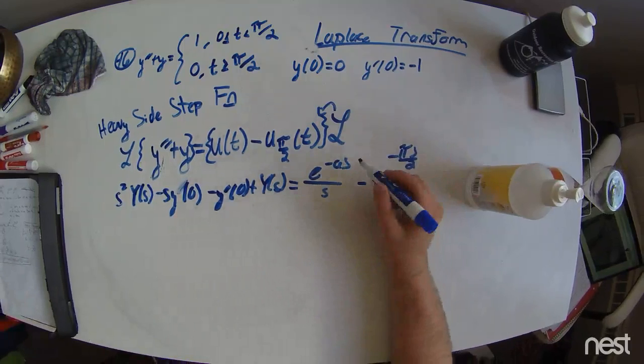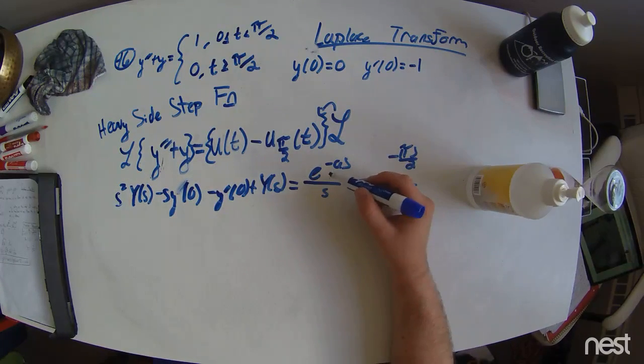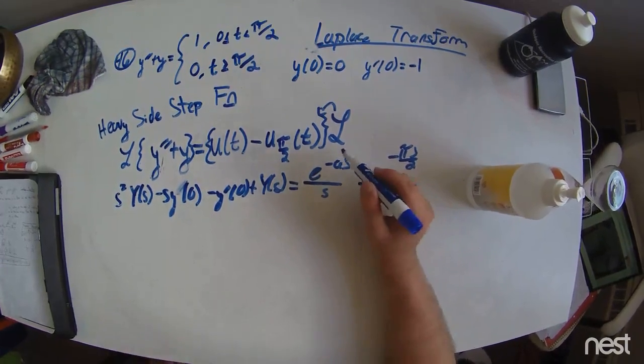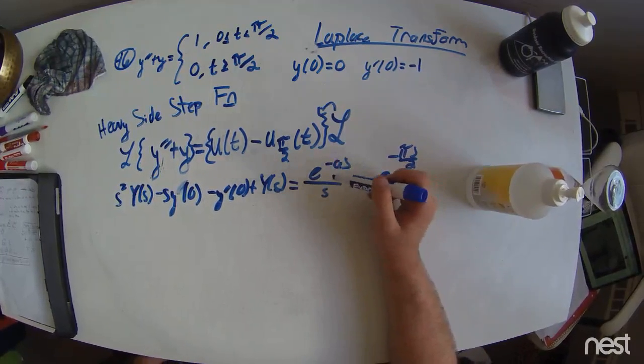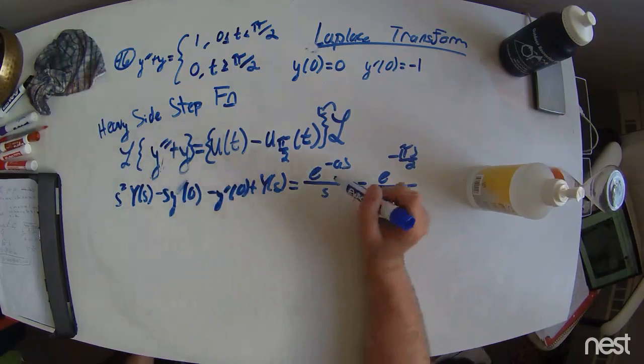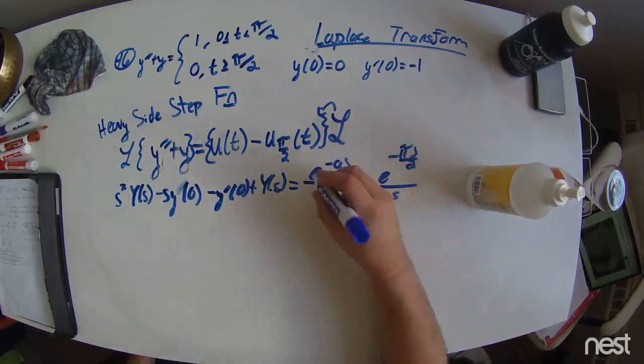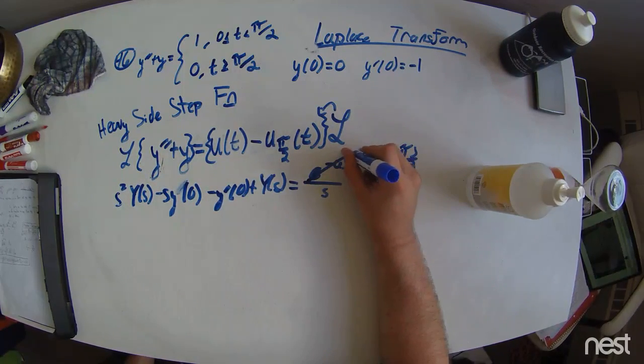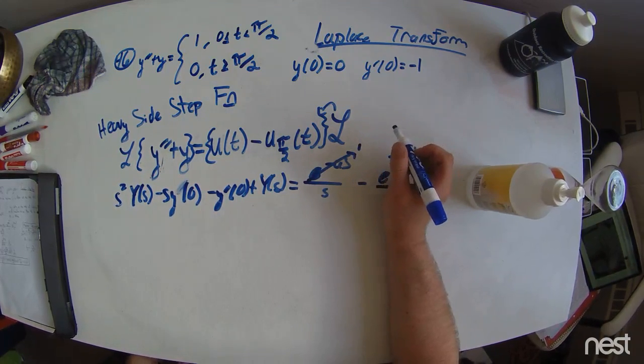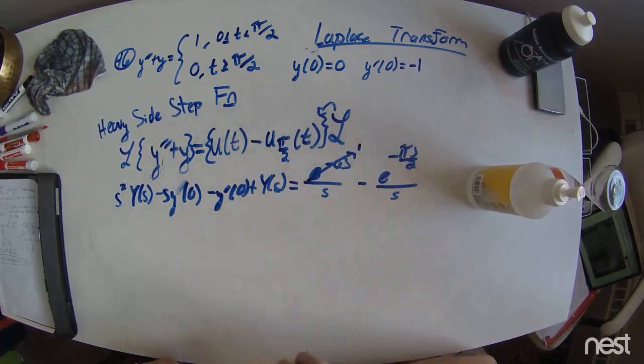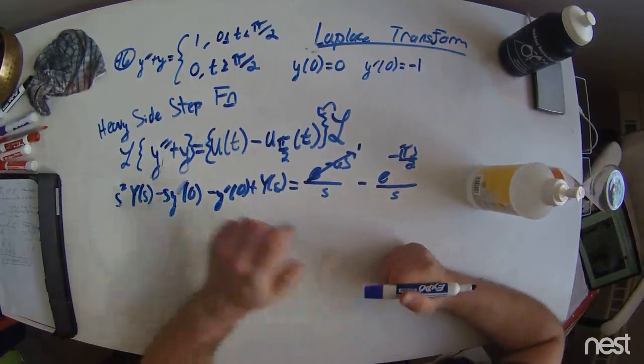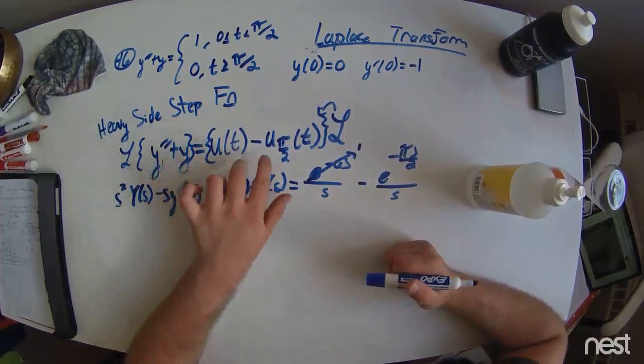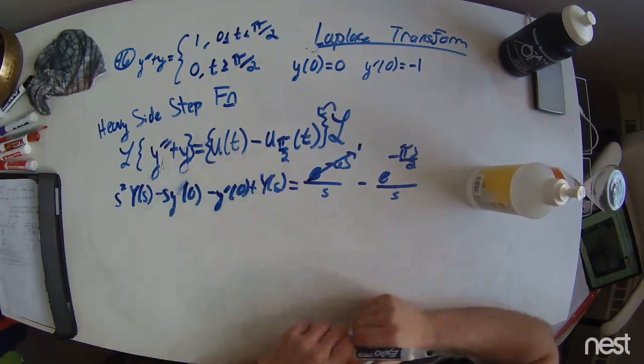However, this a is from a Laplace transform table. So, and that a is the certain time that the heavyside step function turns on, and that time is 0. So, this e is simply e to the 0, which is 1. In order to find out exactly how I got all these expressions, there's a little bit of Laplace transform table of y double prime and y, and the heavyside step functions, and you'll see exactly where they come from.